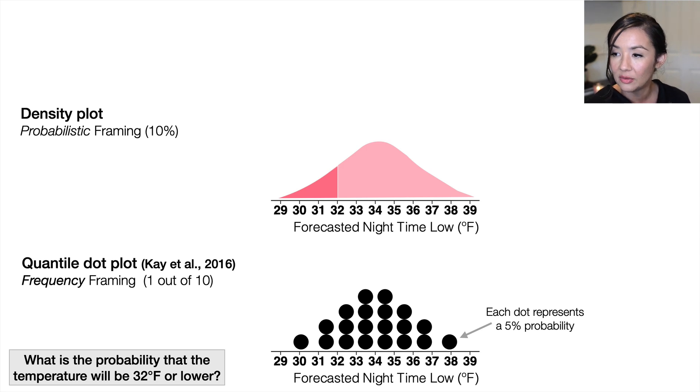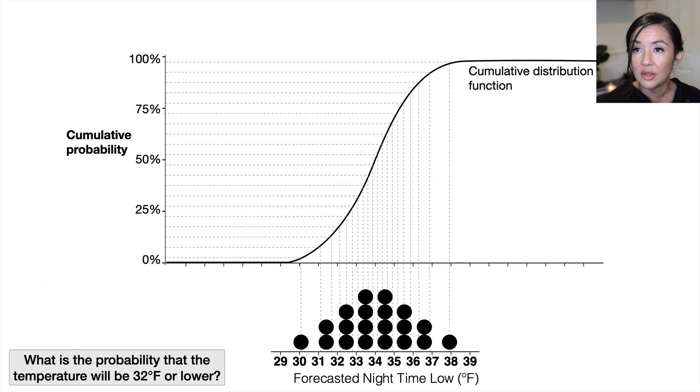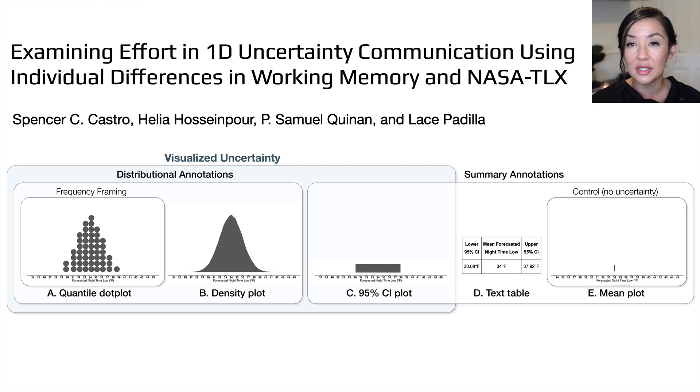Each of these dots in this particular version represents a 5% probability. So you could count 5, 10, 15, and then you would conclude that there's between a 15 and 20% probability that the temperature will be 32 degrees or below. The way we know that is how these are generated. They're based on a cumulative probability function, and we can actually work backwards and determine the explicit probability of any temperature, any value really within the quantile dot plot. That gives us the five communication techniques that we're going to examine.